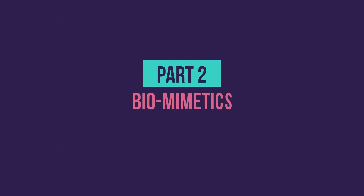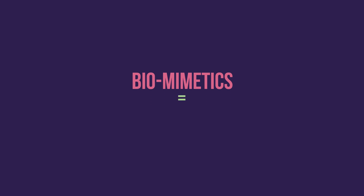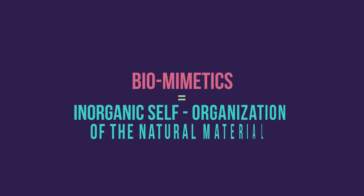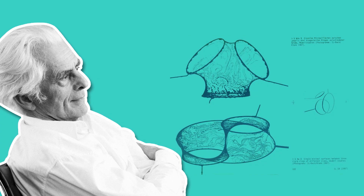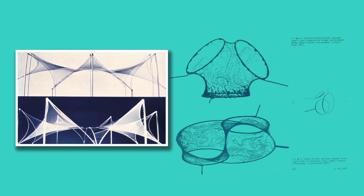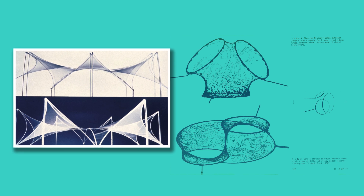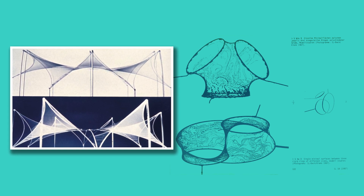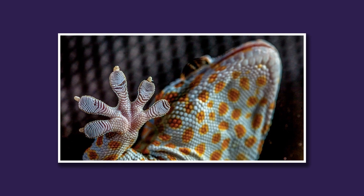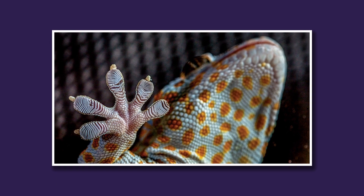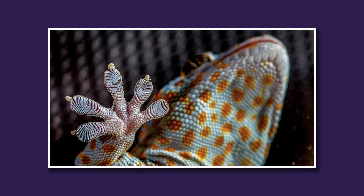Part two: biomimetics. Biomimetics is the observation and study of the inorganic self-organization of natural materials. It inspired a lot of engineering advancements. Some simple examples are the inventions of Velcro and water and dirt repellent coating. Fry Otto pioneered this approach and presented a study where he investigated the formation of soap bubbles, allowing him to discover forms shaped by nature itself rather than trying to invent them himself. The patterns found by biomimetics are based on genetic evolution and the natural physical reaction of materials to the real world.